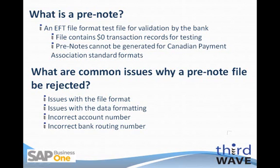If the bank finds any issues with either the format of the file or the values for any of the fields, the bank will reject the pre-note file and provide the sender with information on why it was rejected. Some common reasons for pre-note file rejection include incorrect formats, incorrect data setups, and incorrect accounting or routing numbers.